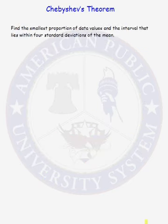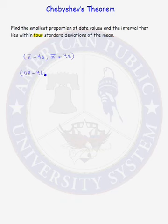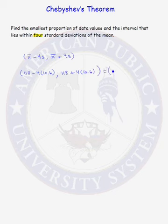Now we want to do the same thing, but instead of looking at two standard deviations, we look at four standard deviations of the mean. Let's start by calculating the interval x-bar minus 4s and x-bar plus 4s. x-bar was 118, minus 4 times the sample standard deviation of 10.6, up to 118 plus 4 times 10.6. That interval is 75.6 customers per hour up to 160.4 customers per hour.